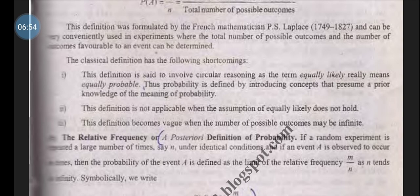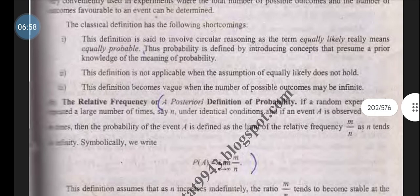Second, the definition is not applicable when the assumption of equally likely outcomes does not hold. Third, the definition becomes vague when the number of possible outcomes may be infinite.